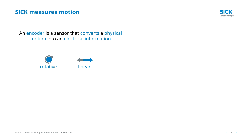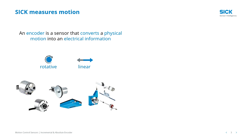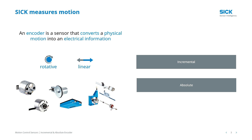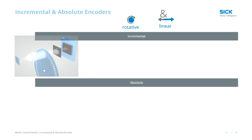This can either be done rotative or linear. SIG offers a wide range of sensor technologies to do so. These sensors measure either an incremental signal or an absolute one. But what's the difference about them?